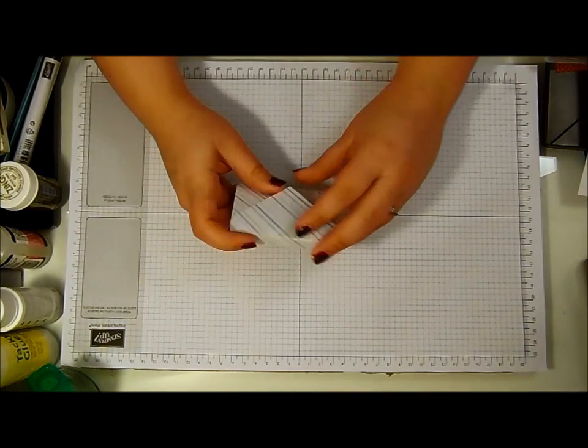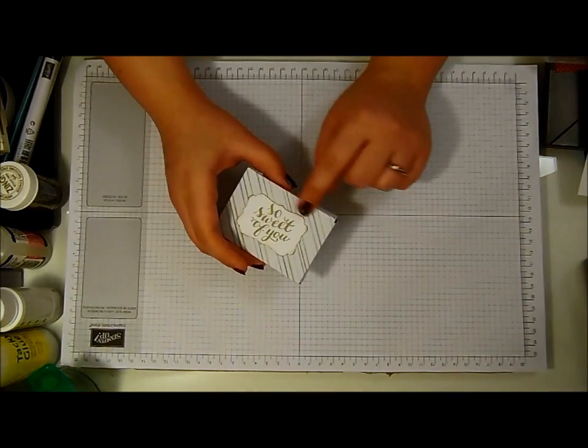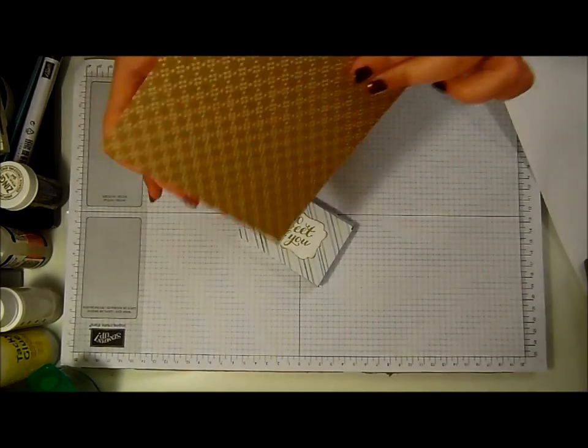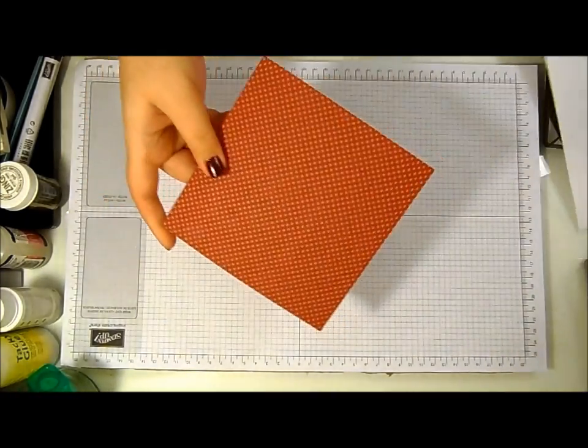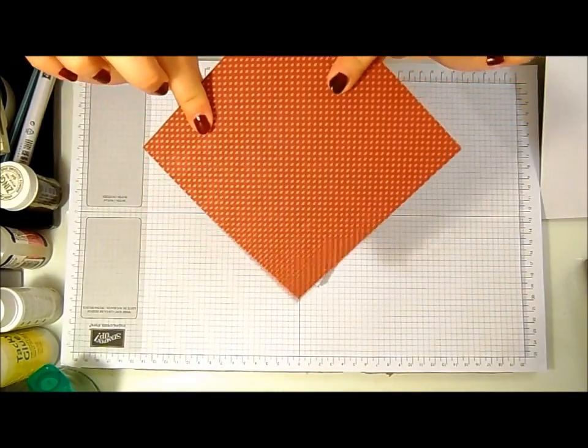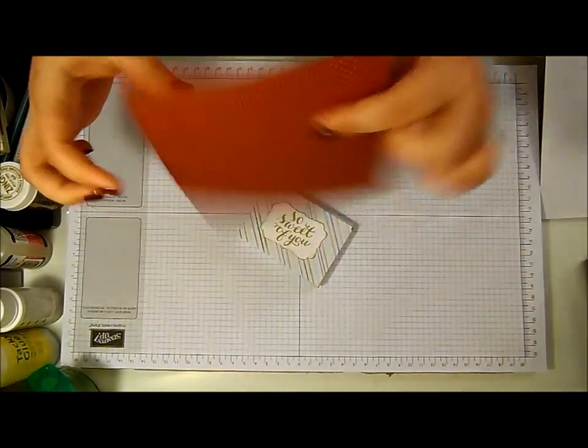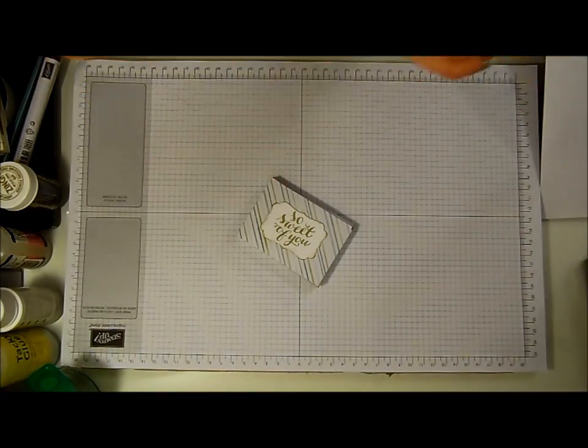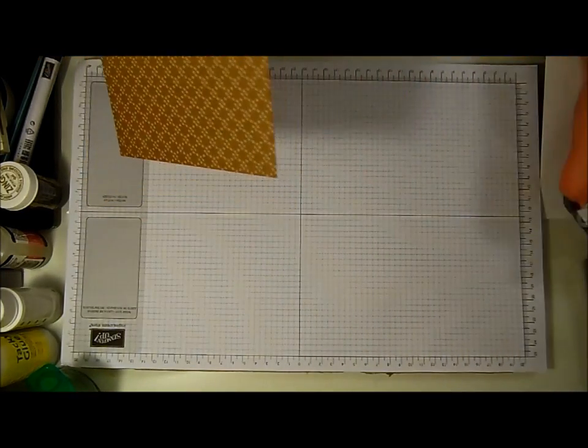This is the All Is Calm designer series paper which is just gorgeous. I'm going to use the Under The Tree specialty paper today, this lovely piece that's Cherry Cobbler. This paper's thicker than paper, it's more of a cardstock weight and it's just gorgeous.